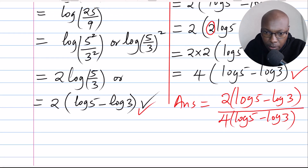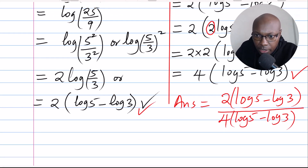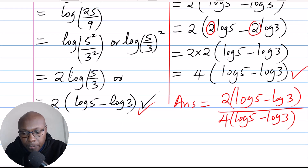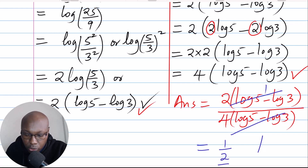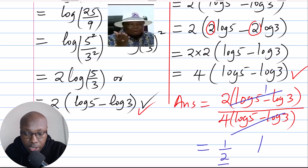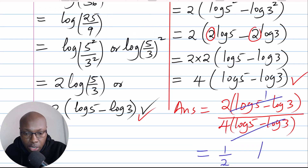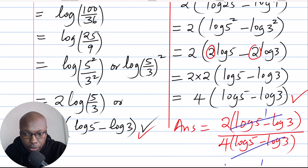Now you can see that log of 5 minus log 3 appears in both the numerator and the denominator, so it divides out. You are left with 2 divided by 4, which simplifies to one half. So the solution to this question, without using a calculator or mathematical tables, is 1/2.